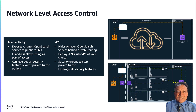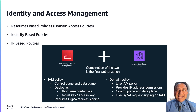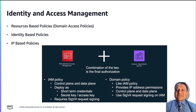You can also use security groups and network ACLs to further control access to the Amazon OpenSearch Service endpoint. Identity and Access Management in Amazon OpenSearch Service controls access to a domain using one or a combination of three types of policies.